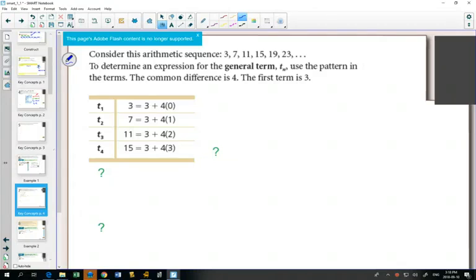In this video, we're going to get introduced to this new term, the general term. So consider the arithmetic sequence 3, 7, 11, 15, 19, 23. We want to find the general term, which is like finding the formula. The same way that I wrote y equals mx plus b in the example before as tn equals 3n plus 1, we're going to try and figure out the formula for the general term.